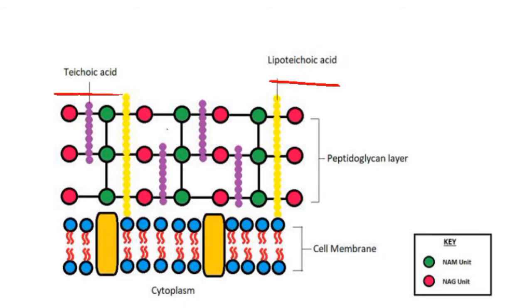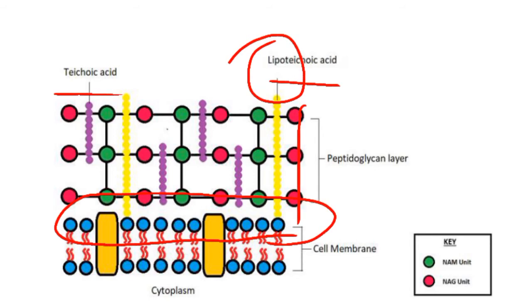Lipoteichoic Acid, as the name suggests, has a lipid part. This means these Teichoic Acids penetrate the peptidoglycan and bind to the lipid of the cell membrane. They are called Lipoteichoic Acids because they are covalently linked to the lipid of the cytoplasmic membrane.